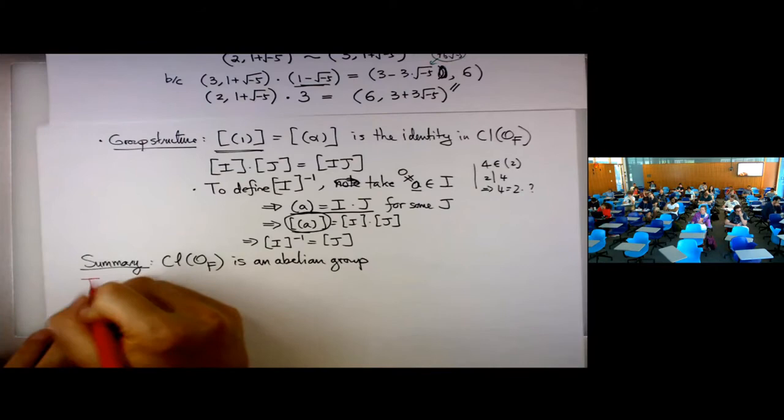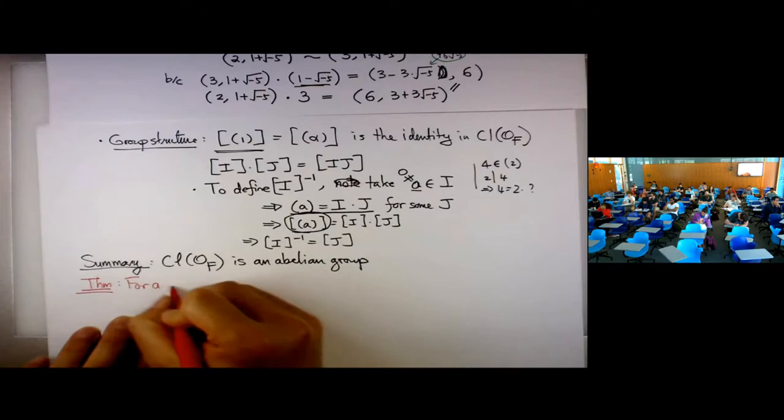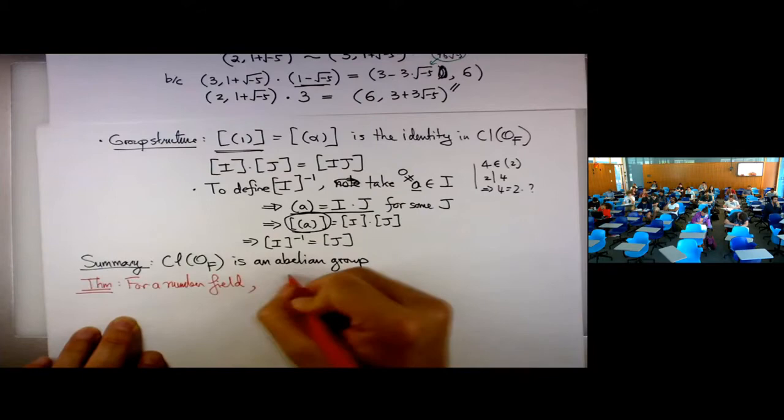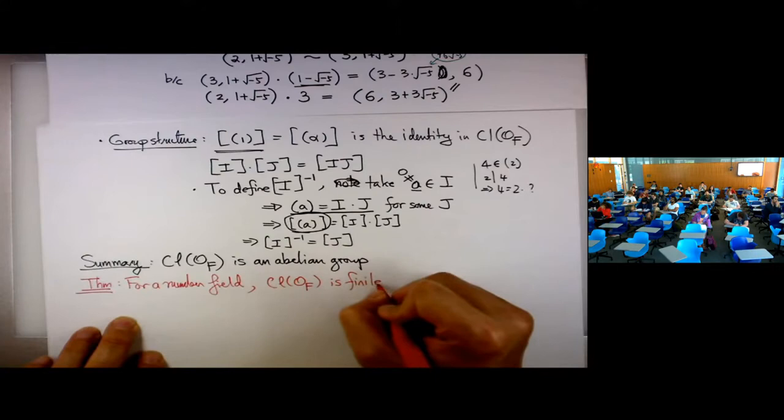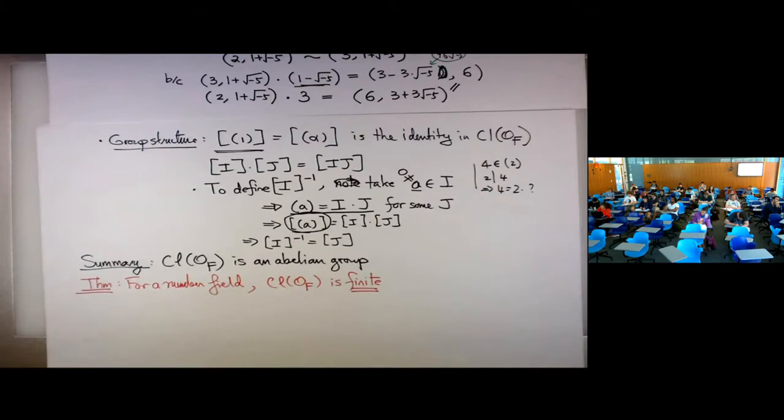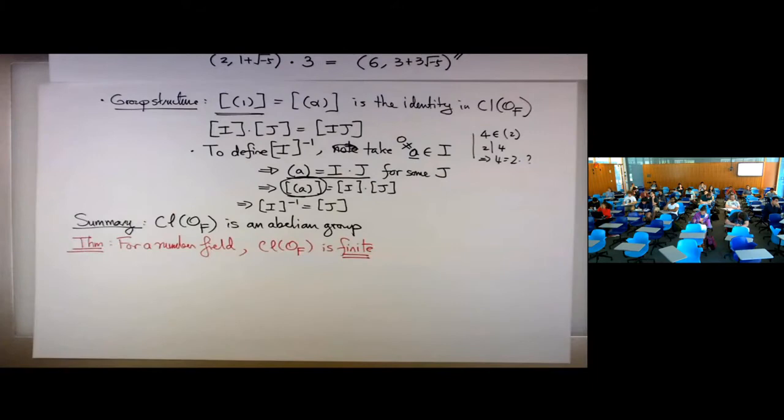I'll state a theorem which I won't prove — it takes a lot of time. For a number field F, the ideal class group is always finite.